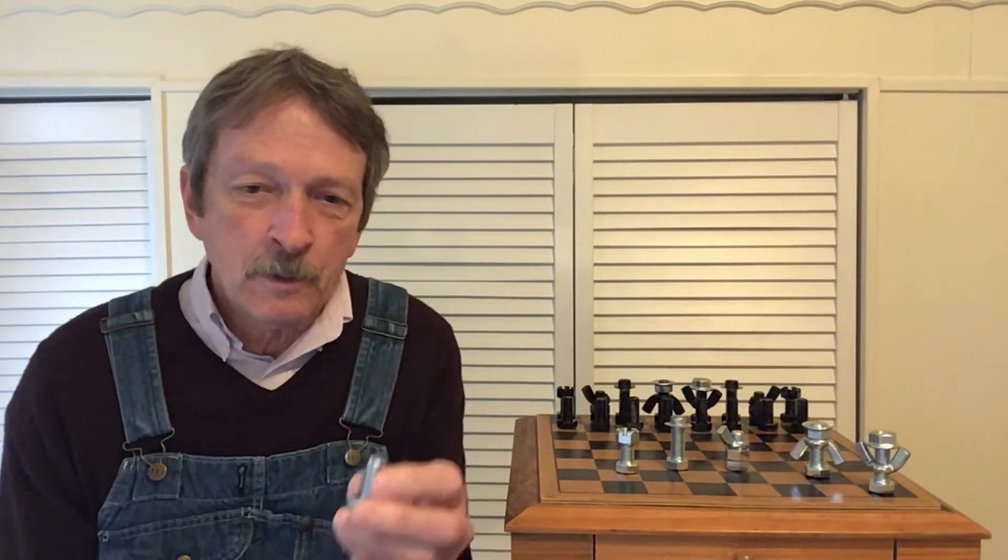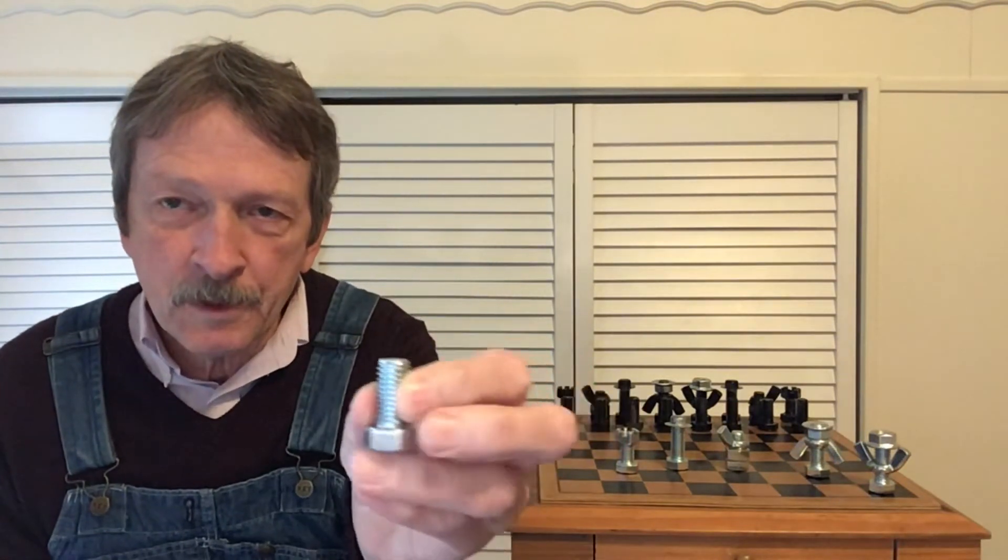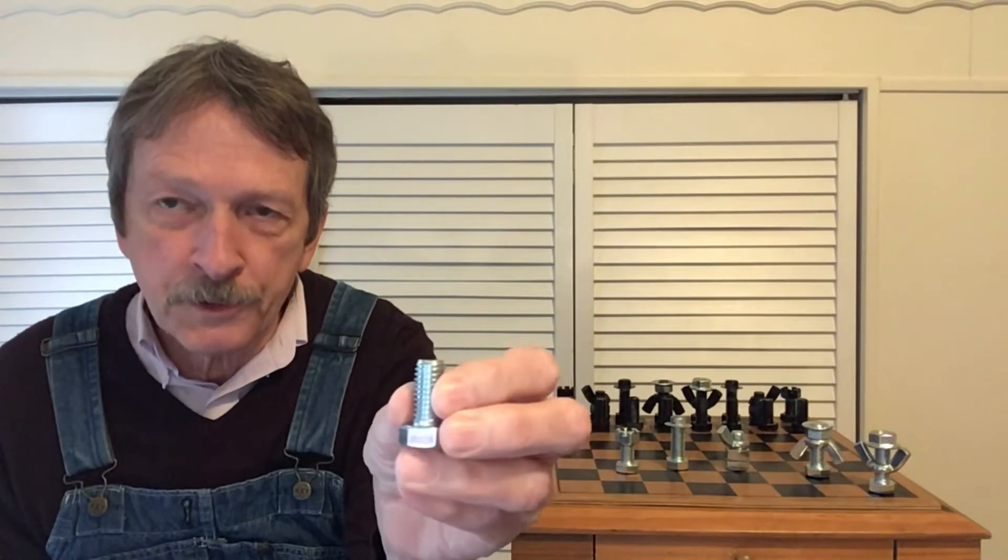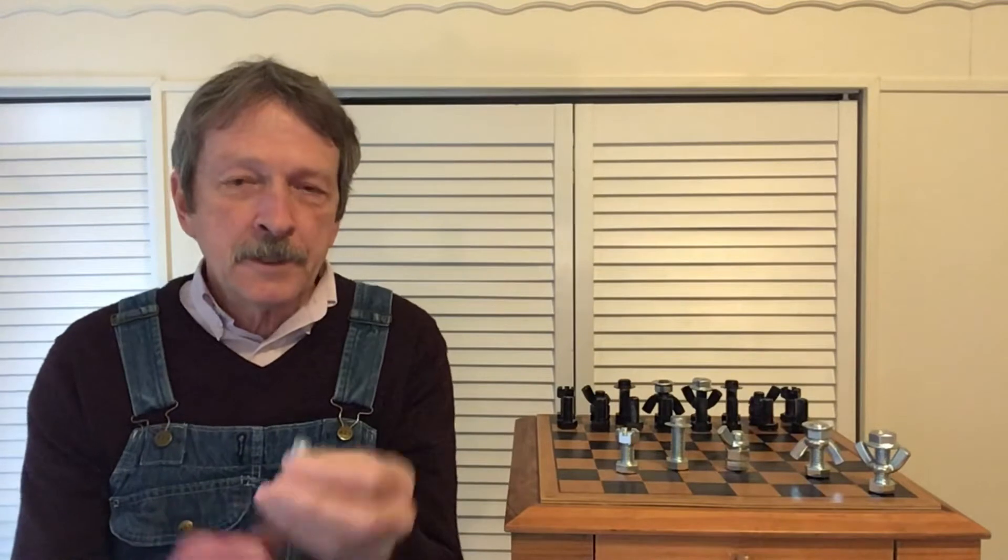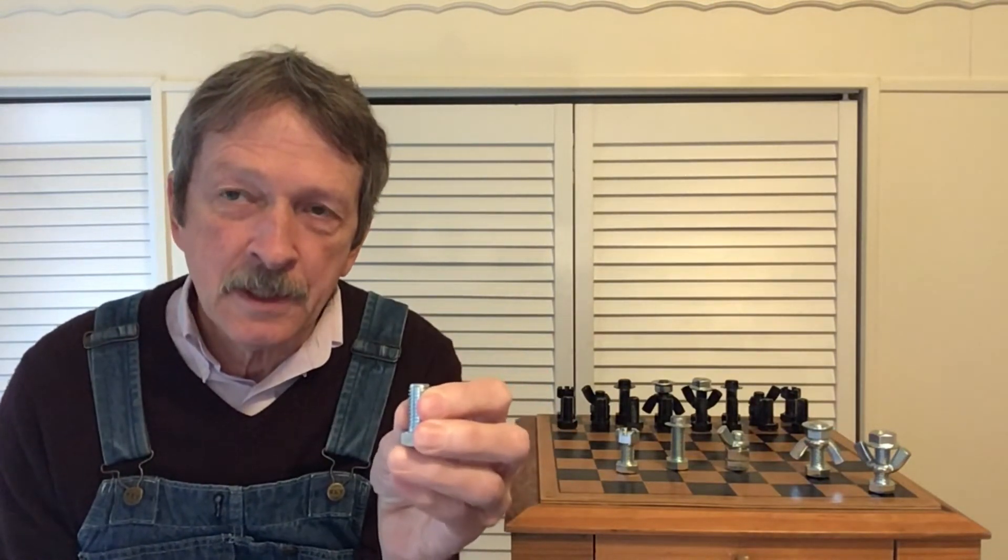So let me introduce you to my team. First of all we have the pawn. Very simple. One piece of hardware here. Just a half inch coarse thread bolt. And this team member comes to us from Ellettsville Indiana which happens to be where I live as well.